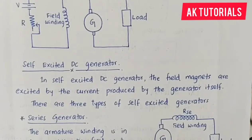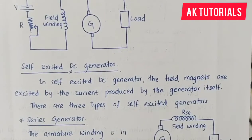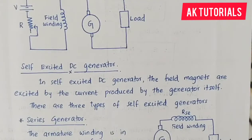The next type of classification is the self-excited DC generator. In the self-excited generator, there is no separate external voltage source for excitation. Instead, it relies on residual magnetism in the magnet.